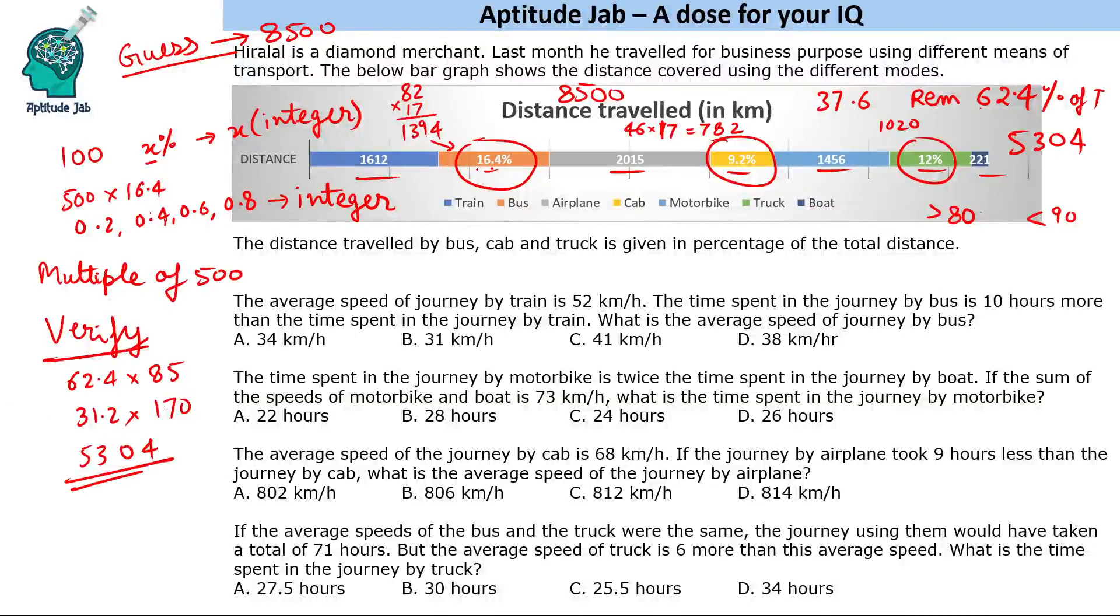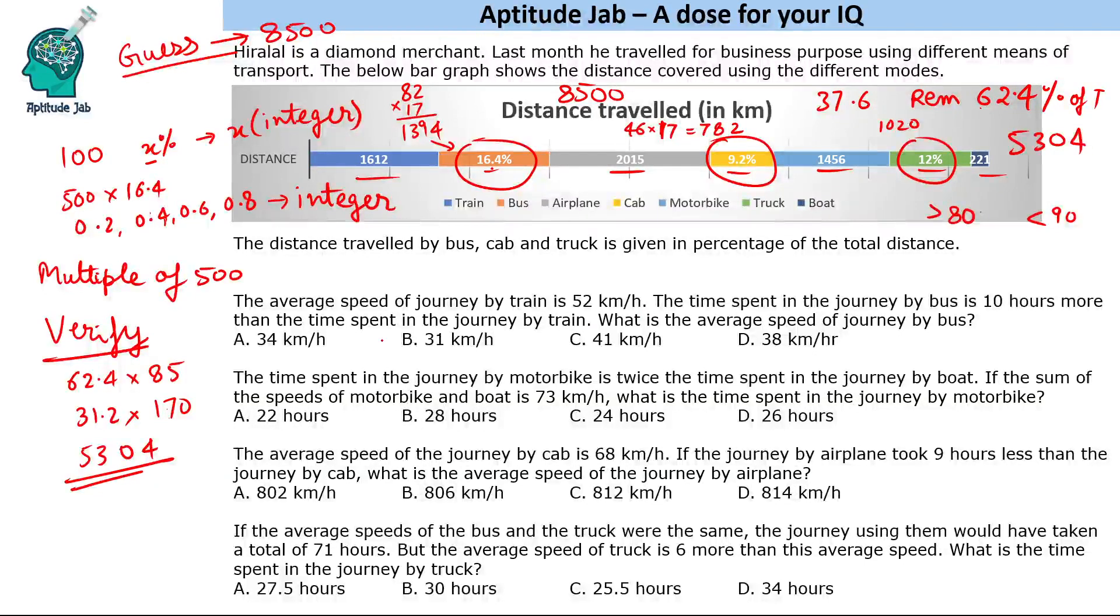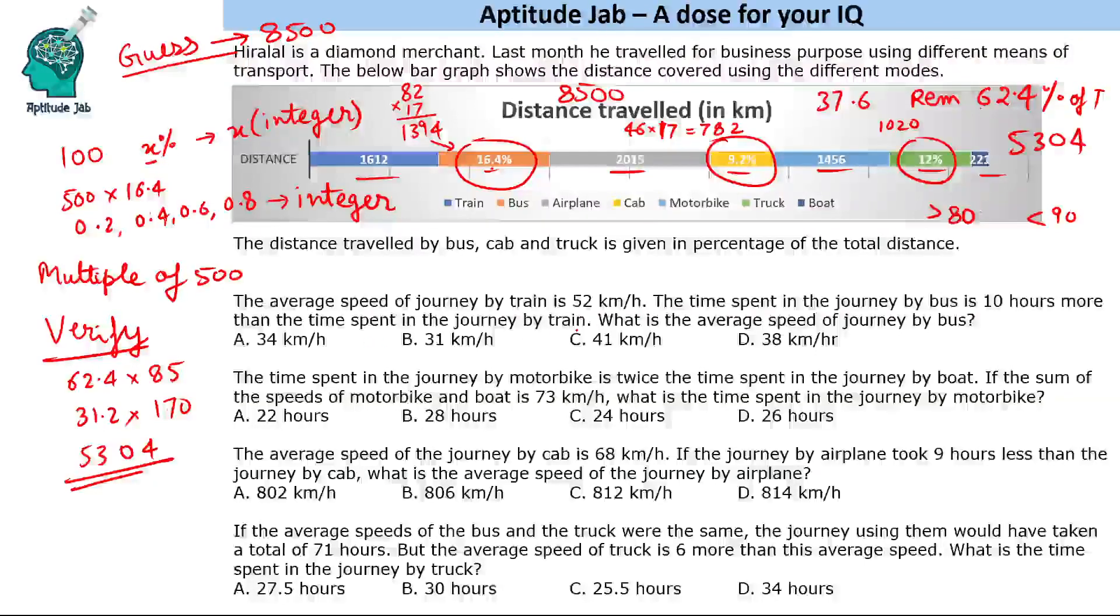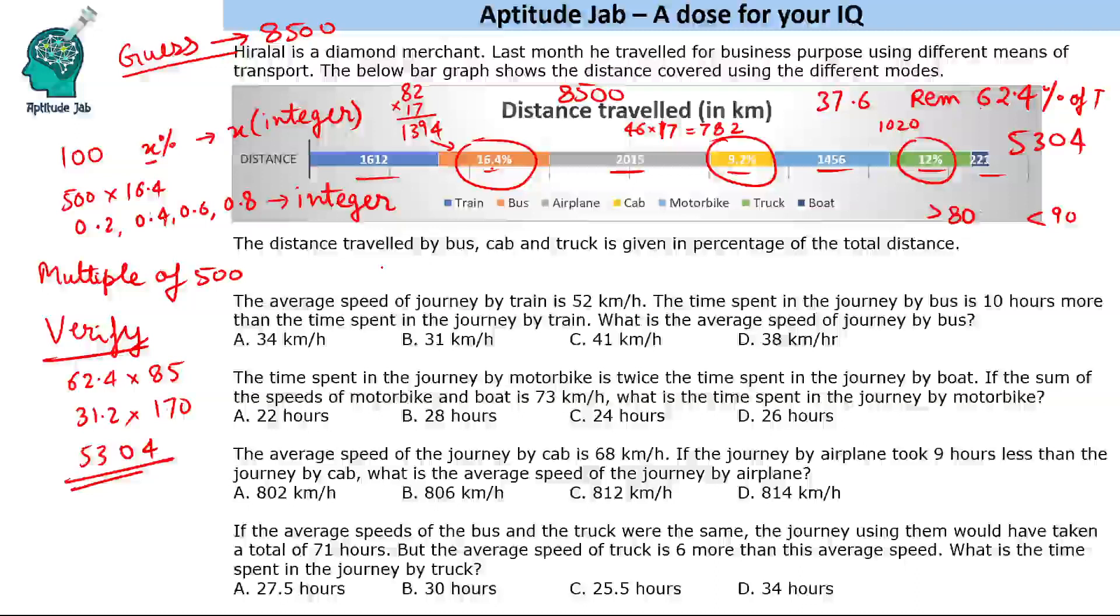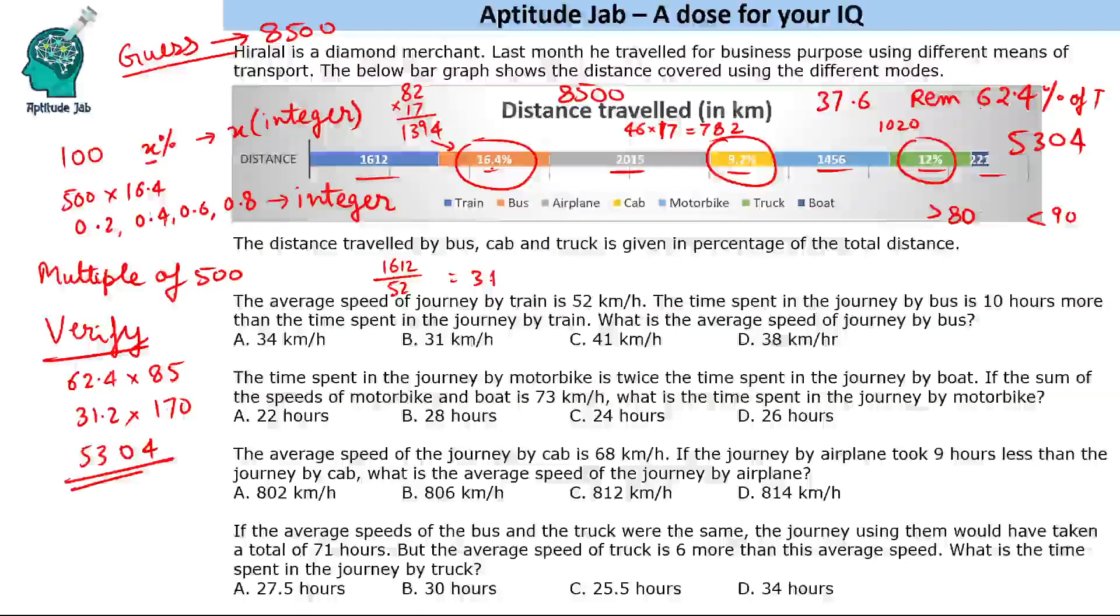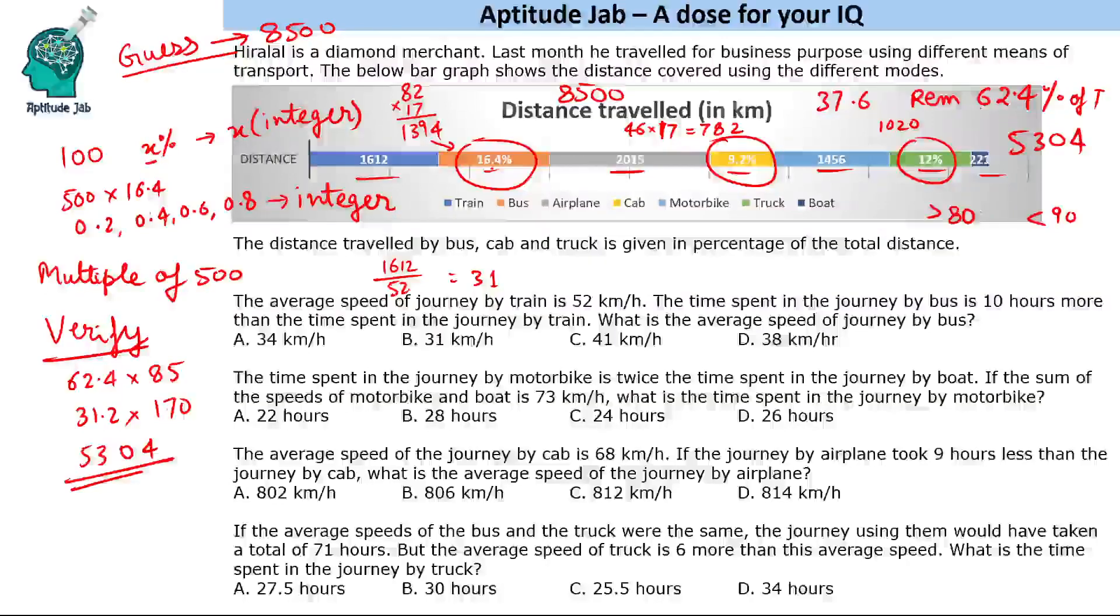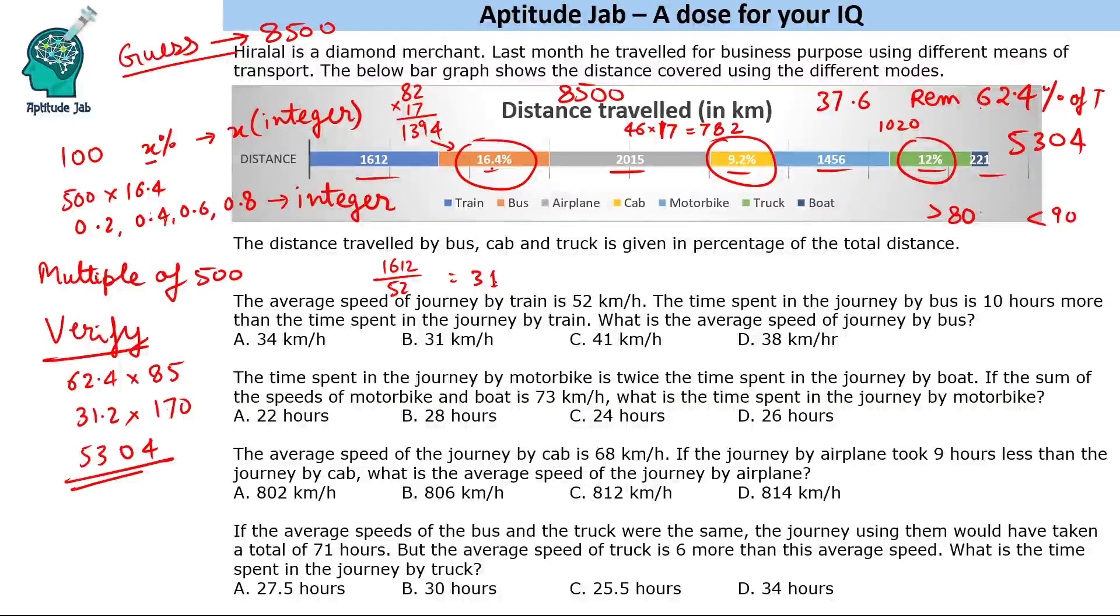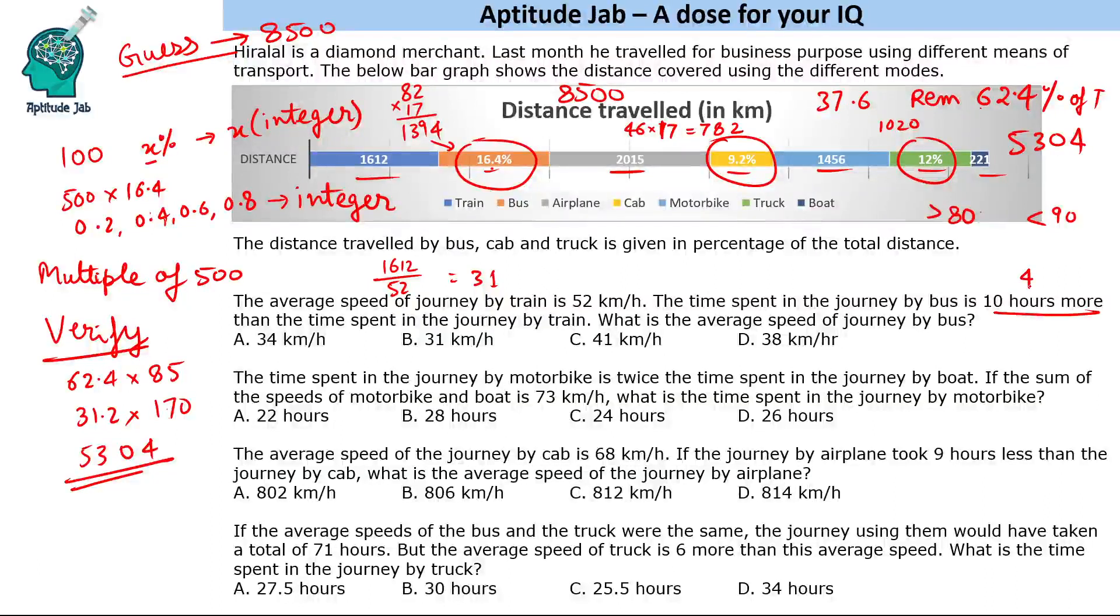The average speed of journey by train is 52 km/h. The time spent by journey by bus is 10 hours more than the time spent in the journey by train. What is the average speed of journey by bus? So journey by train is 52, so divide 1612 by 52. So 5 into 3, that would give you 31. So time spent by journey by bus is 10 hours more, so bus will be 41 hours.